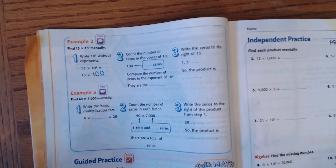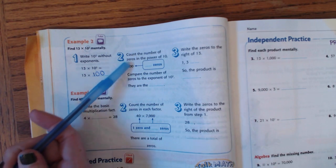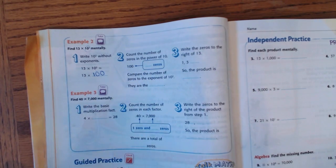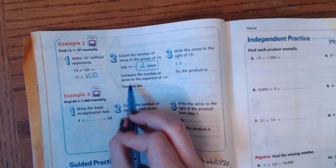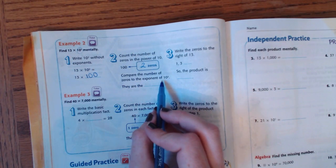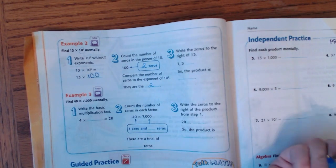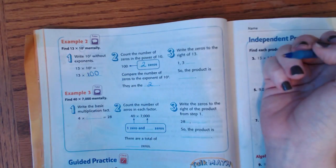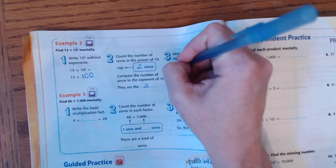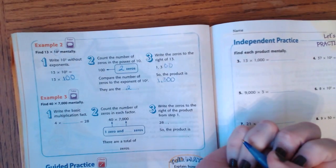Okay, so 13 times 100. Now count the zeros, or count the number of zeros in the power of 10. Well, 100 has how many zeros? It has 2. Compare the number of zeros that are in the exponents of 10 to the second power. Well, there are 2. And write the zeros next to 13. So you'll just write the number 13 and then put two zeros after that. So your answer is 1,300.